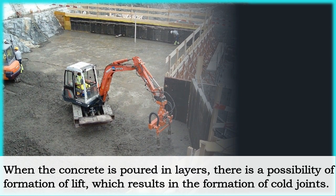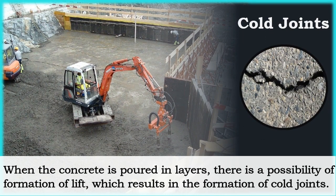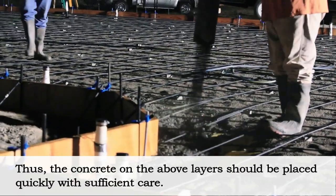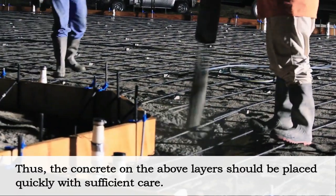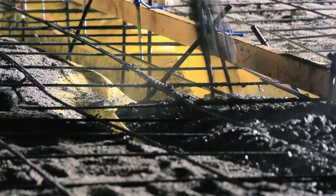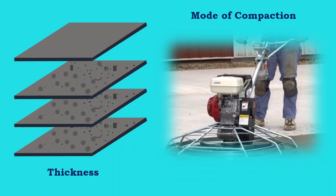When concrete is poured in layers, there is a possibility of formation of lift, which results in the formation of cold joints. Thus, the concrete on the above layers should be placed quickly with sufficient care. The thickness of layers is limited based on the method of compaction and the size and frequency of the vibrator used.